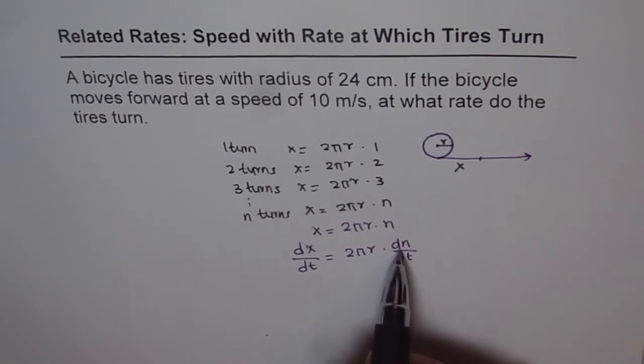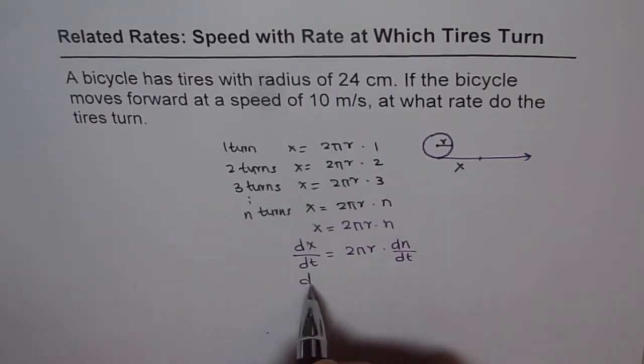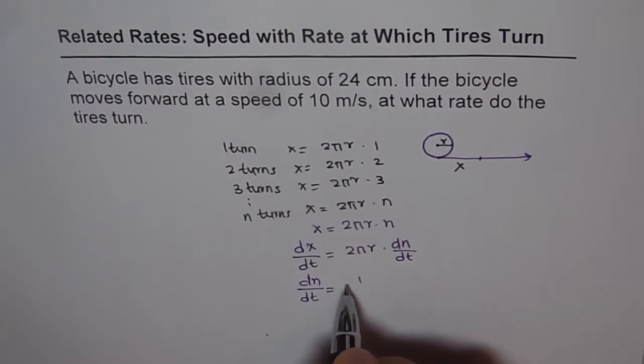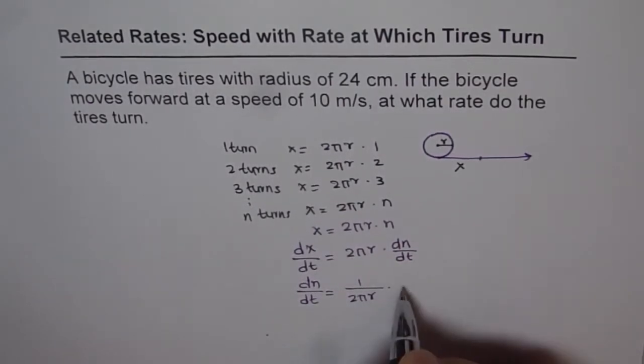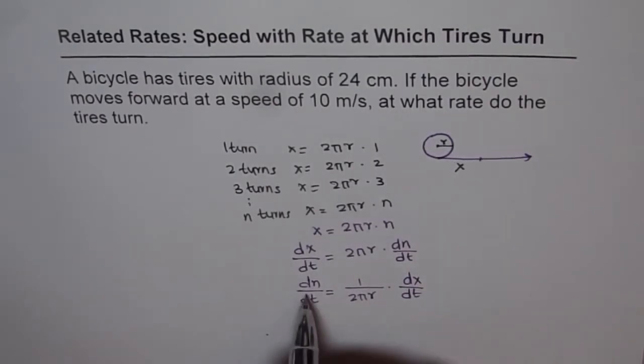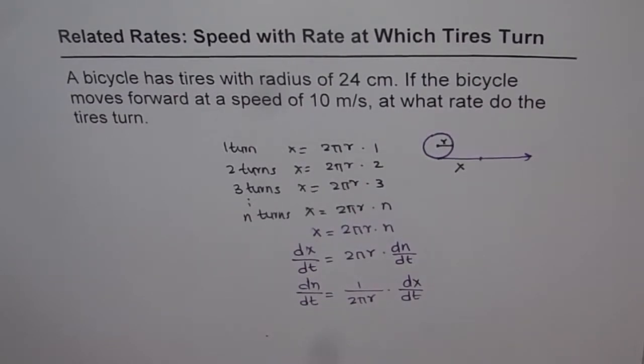If you want to find what dn/dt is, you can reorganize your formula and you get dn/dt equals 1 over 2πr times dx/dt. Knowing dx/dt, you can find dn/dt, and that is related rates. That is how these two quantities are related. Now, let's solve our specific problem.